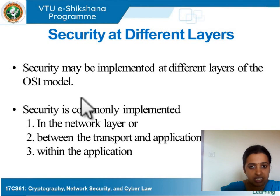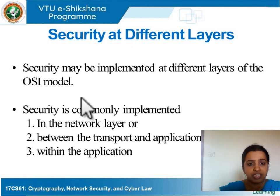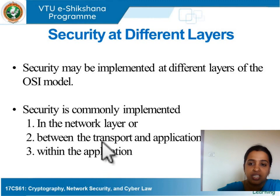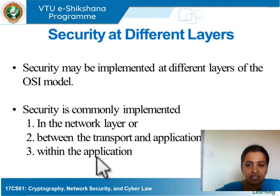The main reason we need security at different layers is that when the internet was designed, it did not include any sort of security. Hence, security techniques had to be developed separately and then incorporated into various layers. Security can be incorporated at the network layer, at the interface between the transport layer and the application layer, or at the application layer itself.